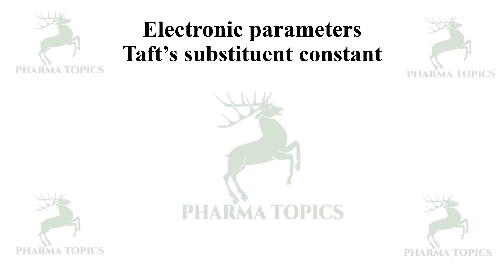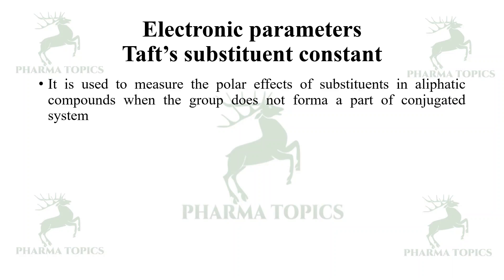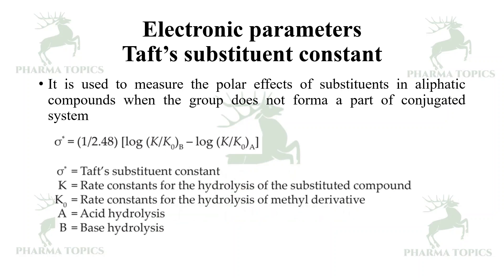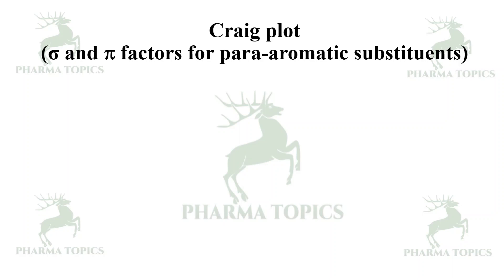Taft's substituent constant (σ*) is used to measure the polar effects of substituents in aliphatic compounds when the group does not form part of a conjugated system. The formula is: σ* = (1/2.48)[log(K/K₀)_B − log(K/K₀)_A], where K is the rate constant for hydrolysis of a substituted compound, K₀ is the rate constant for hydrolysis of the methyl derivative, A is acid hydrolysis, and B is base hydrolysis.